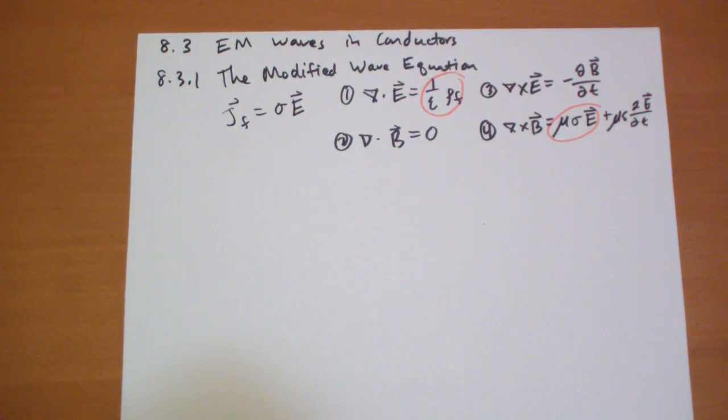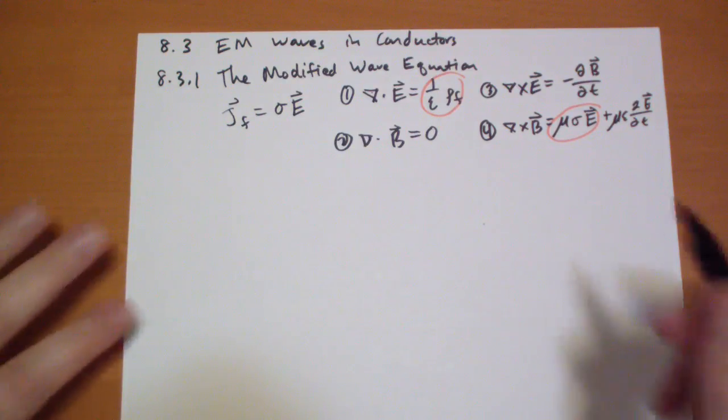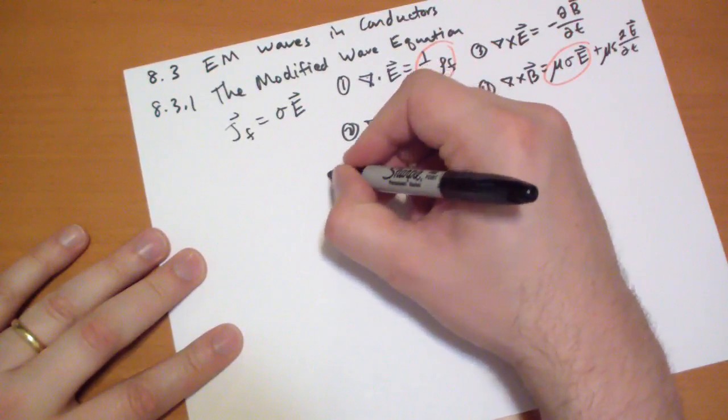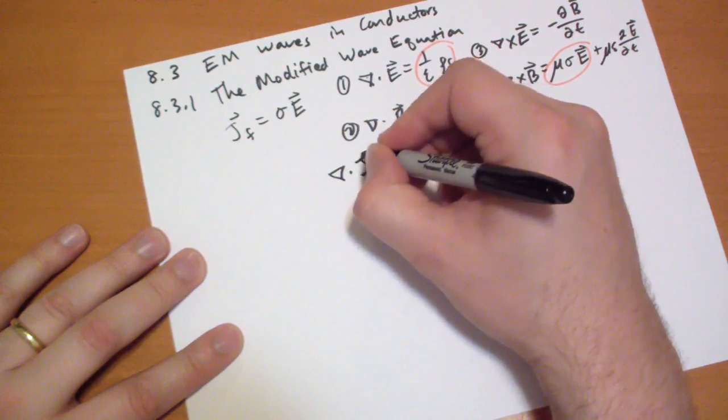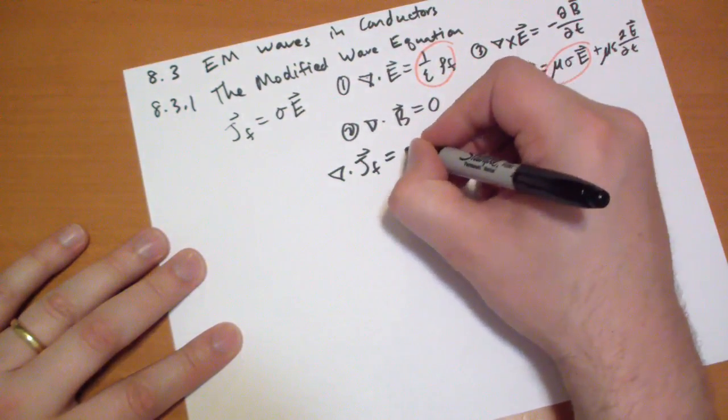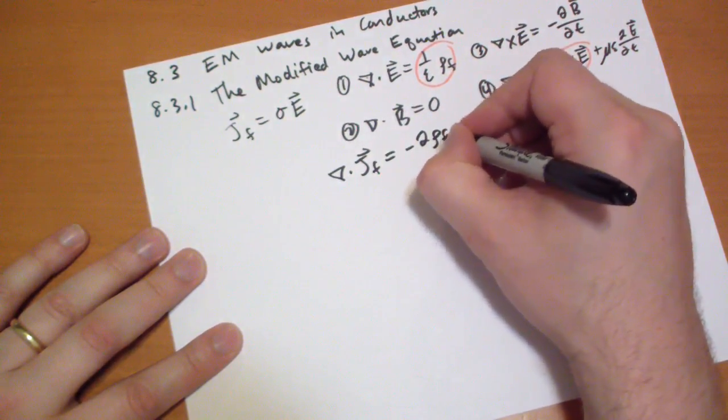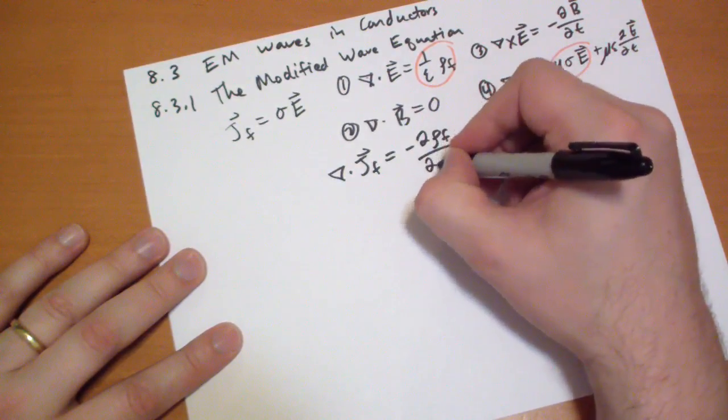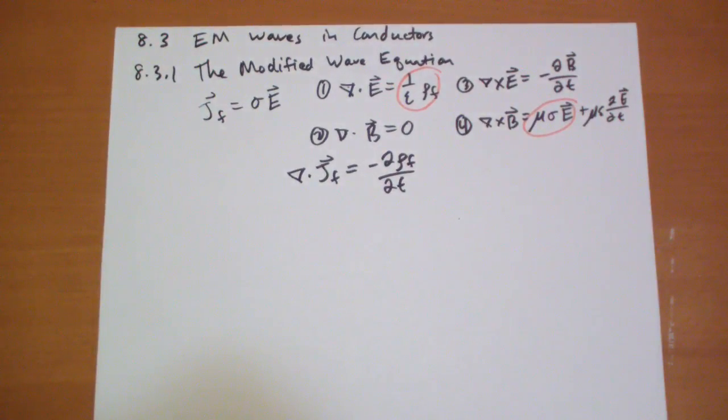We have a continuity equation that relates to current and charge. Basically the divergence of the free current has to equal a negative of the time derivative of the free charge. And that basically, that should be rather obvious why that is. If you have current flowing from a point then the charge at that point is decreasing over time. If you have a current flowing towards a point then you have a charge increasing at that point.